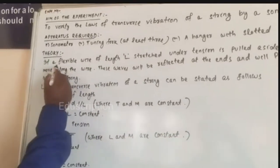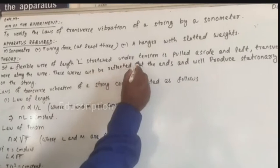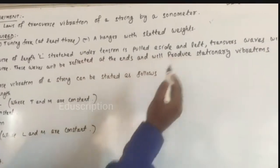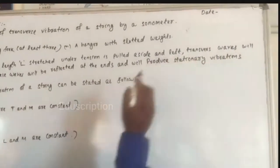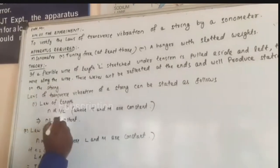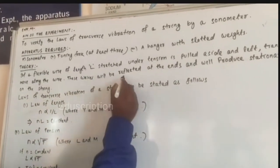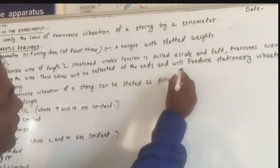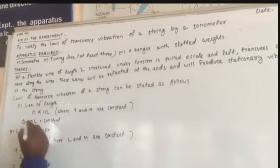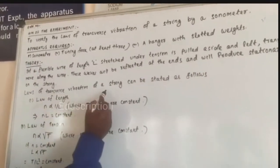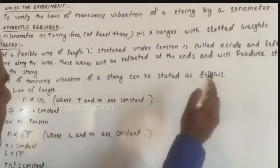Theory: If a flexible wire of length L stretched under tension is pulled aside and left, transverse waves will move along the wire. These waves will be reflected at the ends and will produce stationary vibrations on the string. Laws of transverse vibration of a string can be stated as follows.